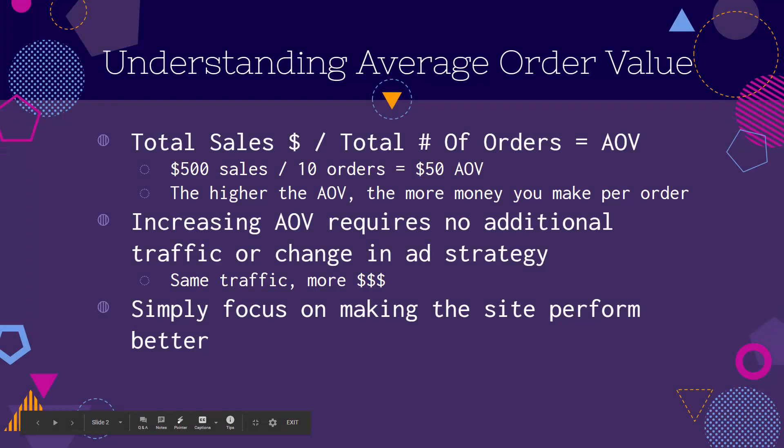To do this, you first need to understand the concept of average order value. This is a little bit of a math equation — super simple. Average order value, as the name implies, is the average amount that you take in when you receive an order. Not the total that you make. Let's say you sell one order for $20 and one order for $30 — your average order value is $25. It's just the total number of sales divided by the total number of orders. If you make $500 in sales and you have 10 orders, $500 divided by 10, that's $50.